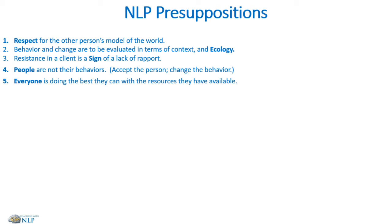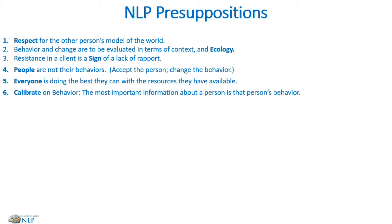Number six: we want to calibrate on behavior. The most important information about a person is that person's behavior. People are very easy to pay lip service — it's very easy to say 'I want to do something' but not do it. People say one thing and do something totally different, so we want to calibrate on the behavior, on what they're actually doing.